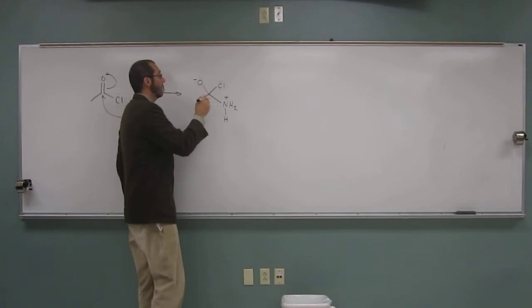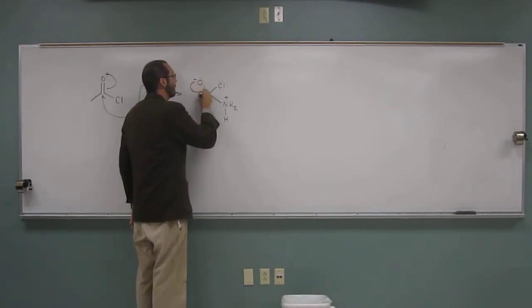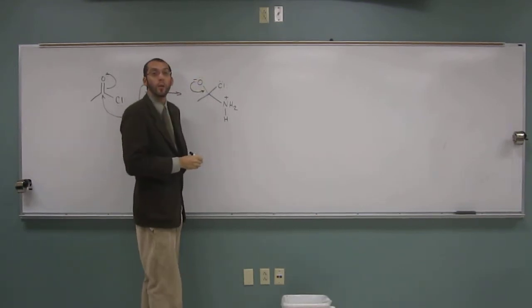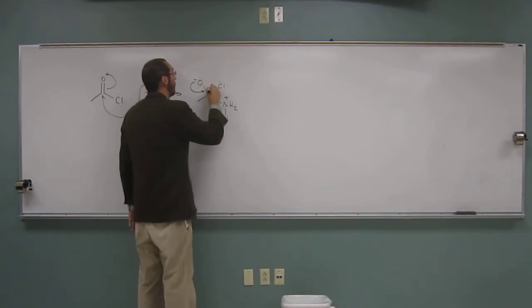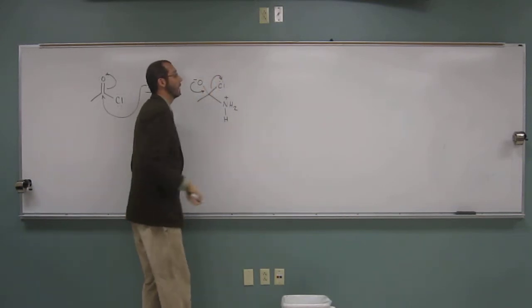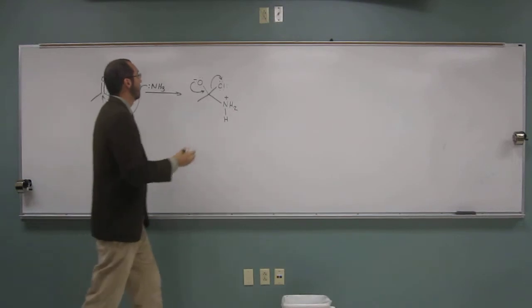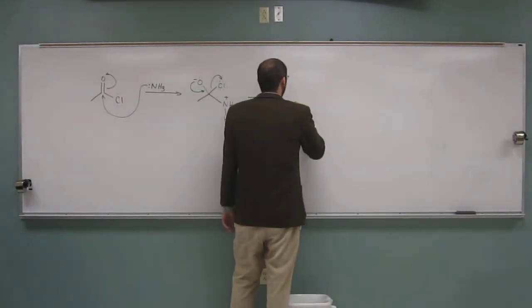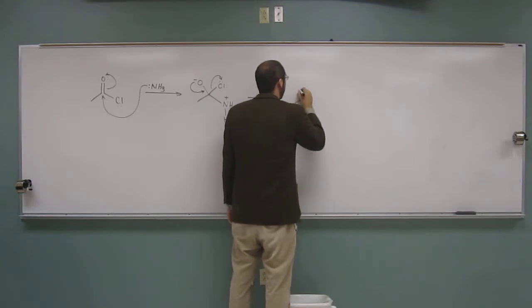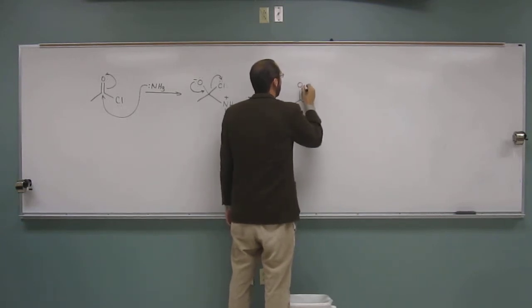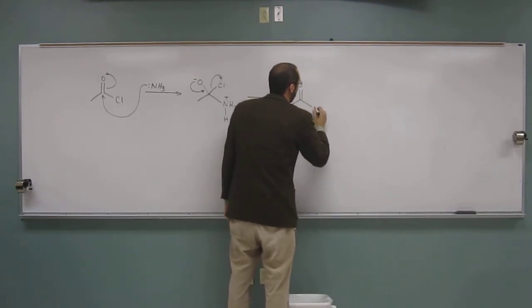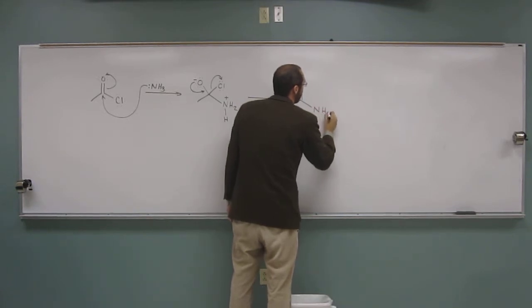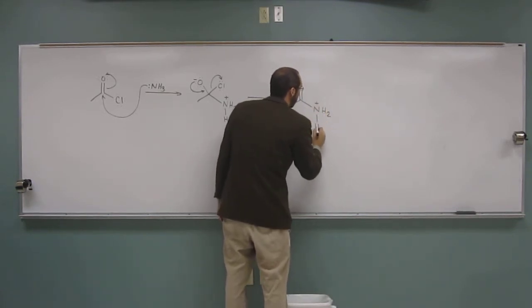So to promote the reaction, we're going to draw the mechanism that shows the chlorine getting knocked away. The chlorine is the leaving group at that point. So when we do that, we're going to have this intermediate, and I'm going to continue to draw that with an H count.